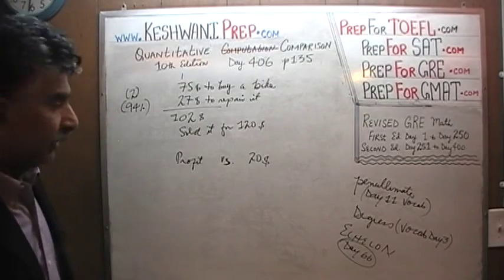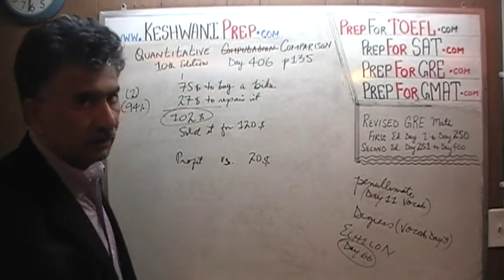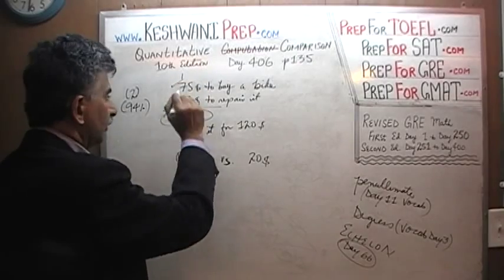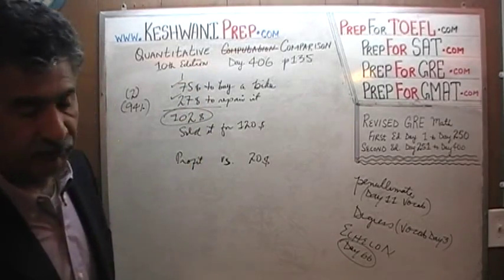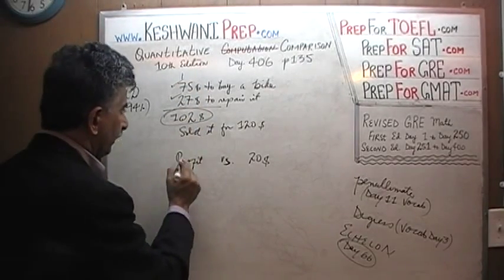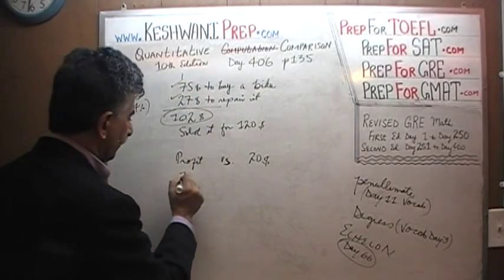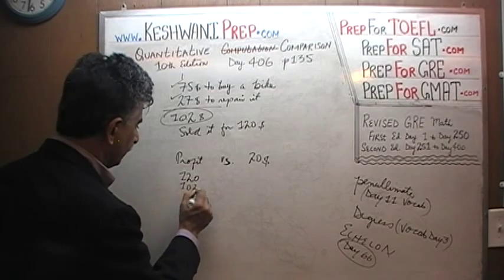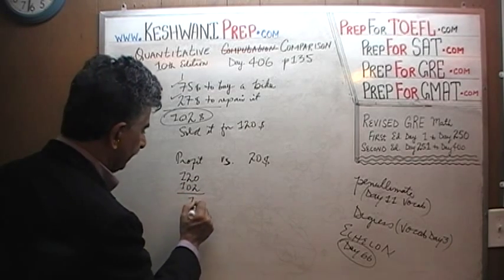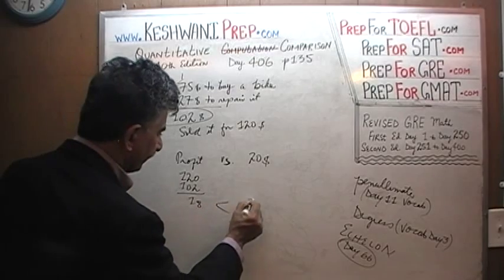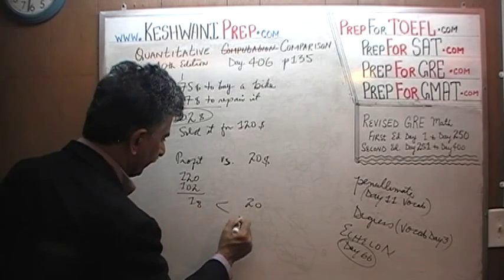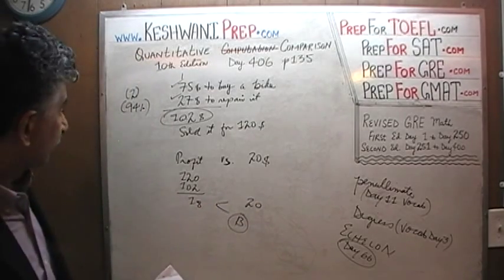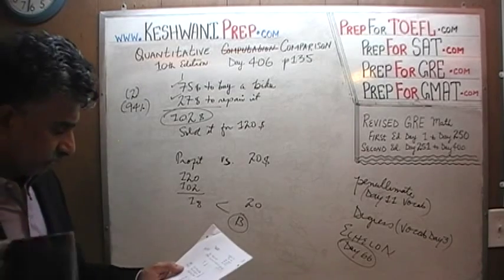Well, as we can clearly see, we spent a total of $102 — $75 to purchase it and $27 to fix it. Therefore our profit is $120 minus $102, which is $18, which is less than $20. The answer is B. Which is why the percentiles are so hard, because these are very simple questions.